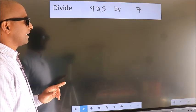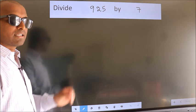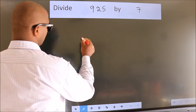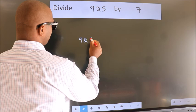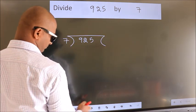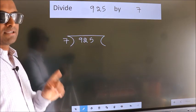Divide 925 by 7. To do this division, we should frame it in this way: 925 here, 7 here. This is your step 1.